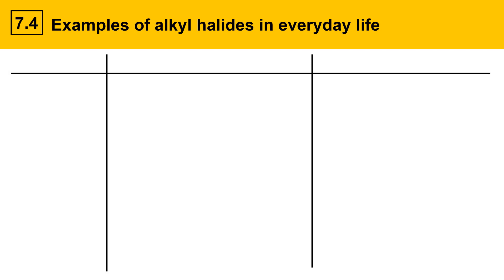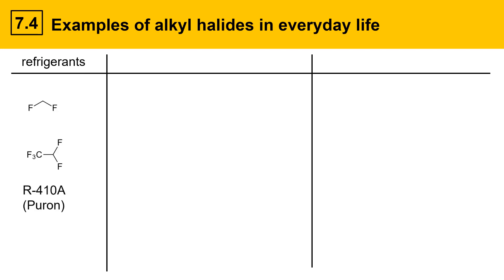Here are some examples of alkyl halides in everyday life. One place where alkyl halides are important is in refrigerants — the liquids present in refrigerators and air conditioners. Some have contained chlorine in the past, but those have been mostly eliminated in favor of fluorinated alkanes. For example, there's a mixture of difluoromethane and a fluorinated ethane molecule. This product is called R410A, also sold under brand names Puron and Forane, and it's a very common refrigerant used in air conditioners and refrigerators.